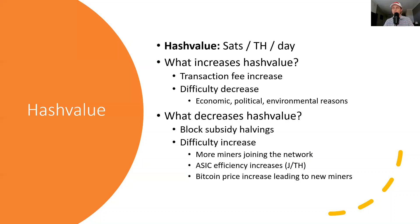The first one is the block subsidy halving. This is something that occurs every four years in Bitcoin, where the amount of new Bitcoin released to miners through the block subsidy gets cut in half. Basically, it cuts hash value roughly in half. Another key example that happens just about every two weeks is network difficulty increases. This occurs normally when more miners are simply joining the network, and it can also occur when ASICs are becoming more efficient. Over time, both of these are typically happening relatively slowly, but difficulty is constantly moving upwards.